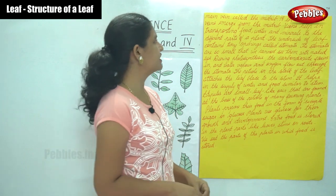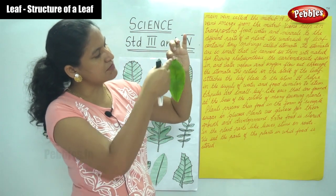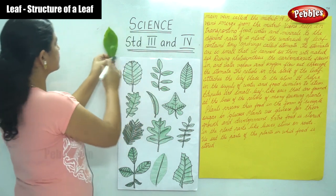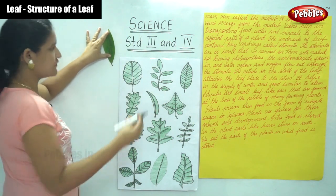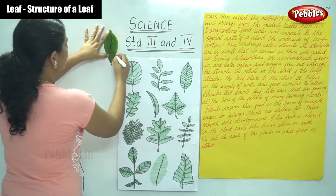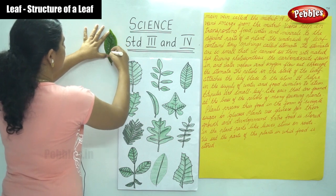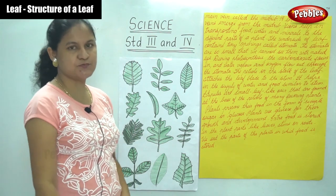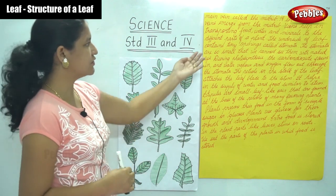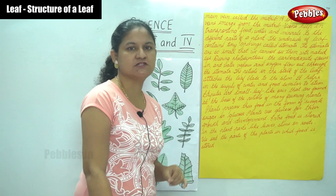In the center of the leaf runs the main vein called the midrib. A lot of side veins emerge from the midrib. Veins help in transporting food, water, and minerals to the different parts of the plant.